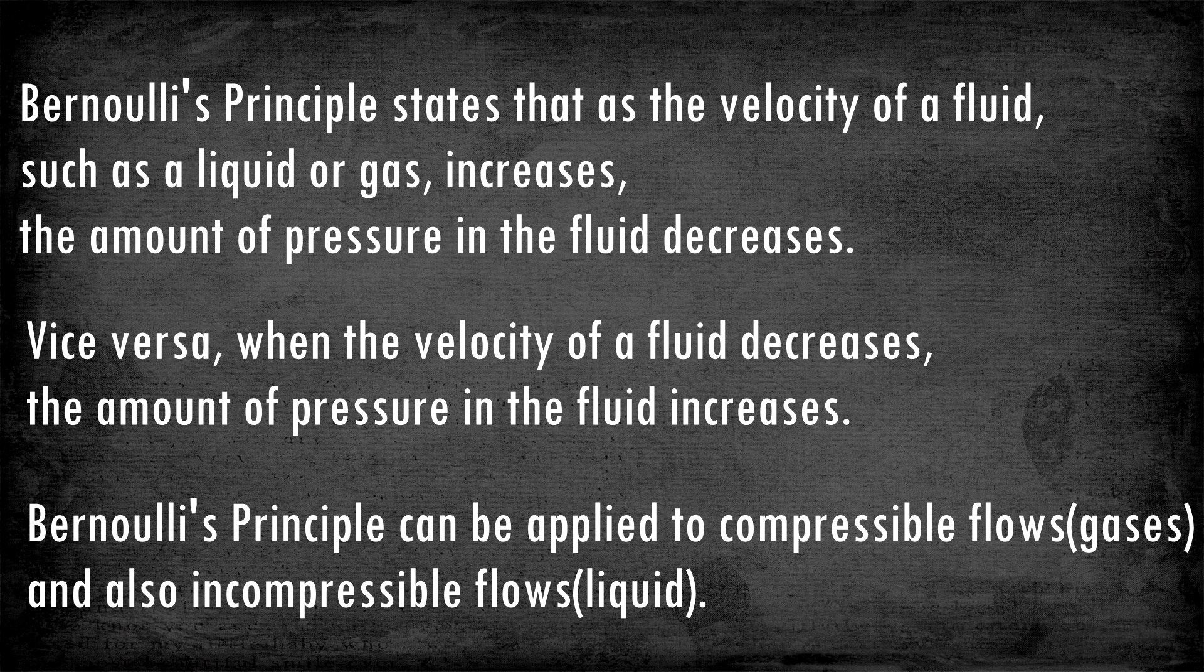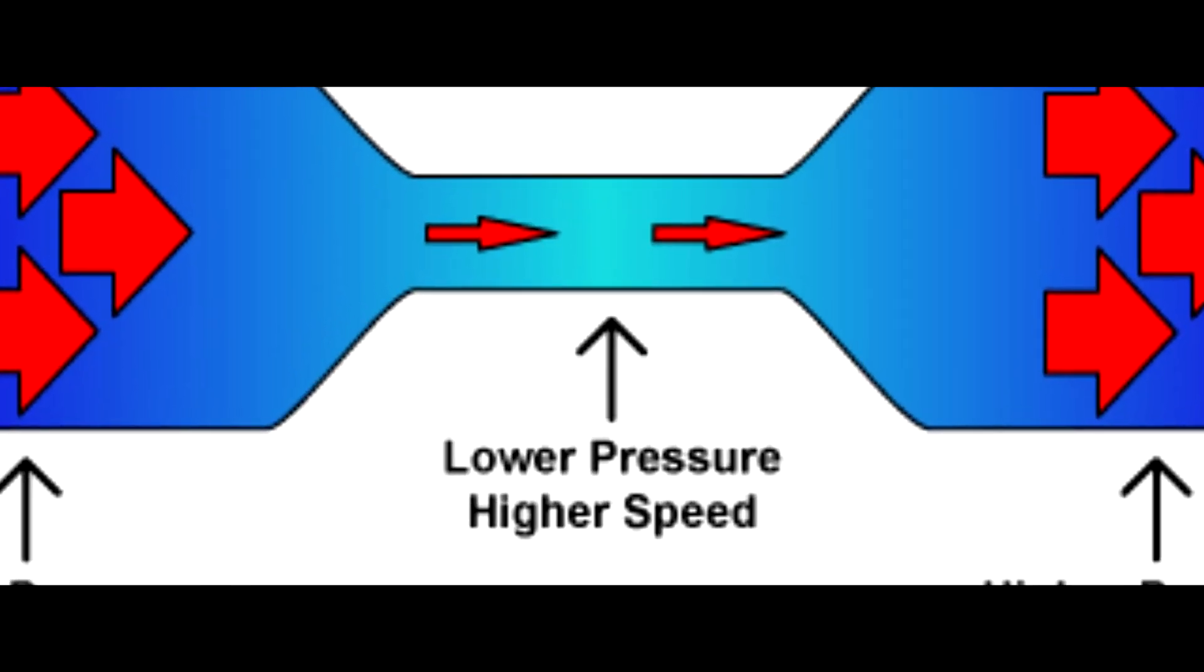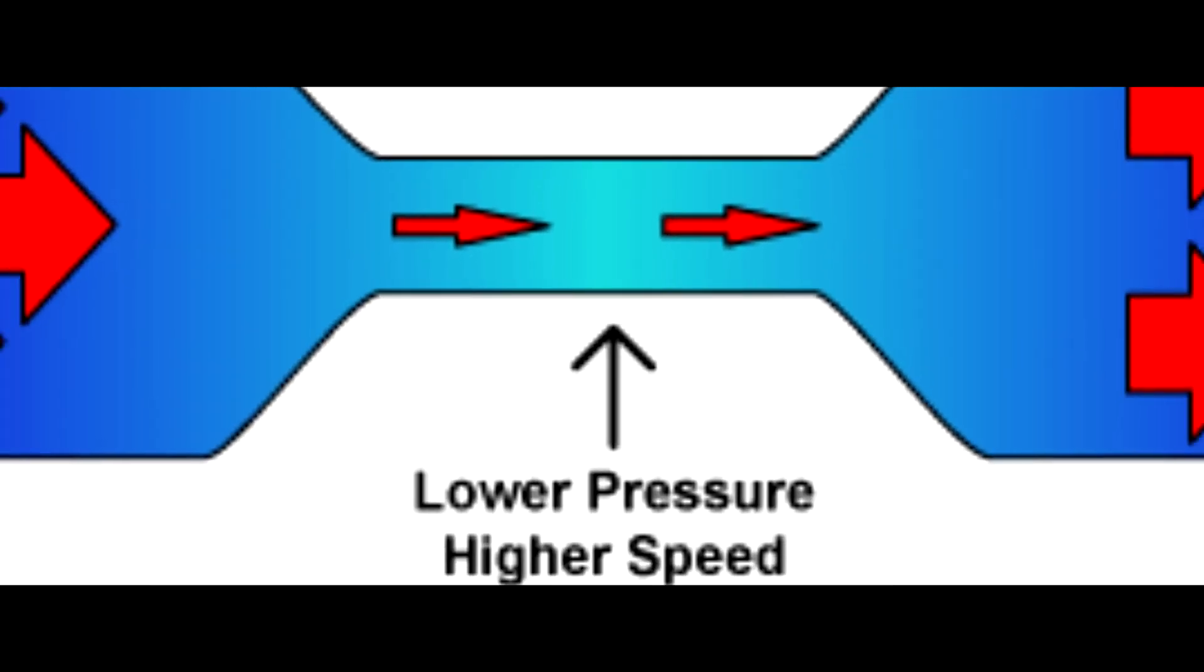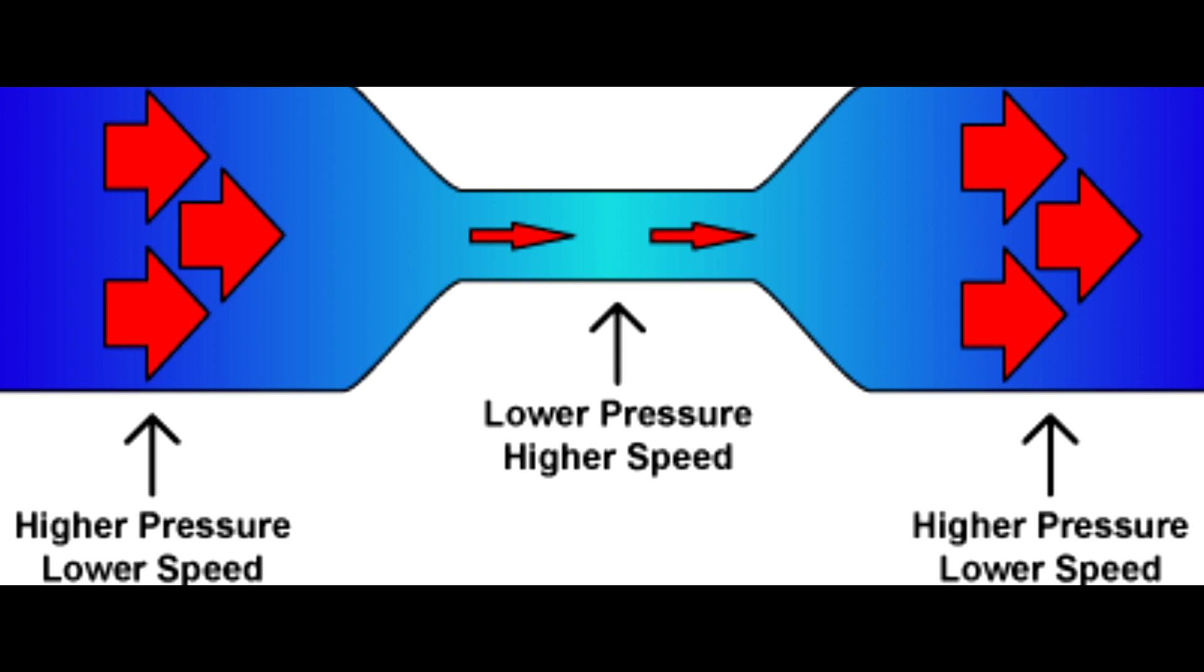Bernoulli's Principle can be applied to compressible flows such as gases, and also incompressible flows such as liquids. In the middle region of this picture, there is an area of lower pressure, therefore creating a greater velocity. On the left and right sides of this picture, there are areas of higher pressure which result in a lower velocity.